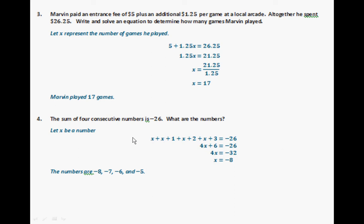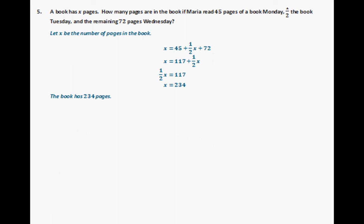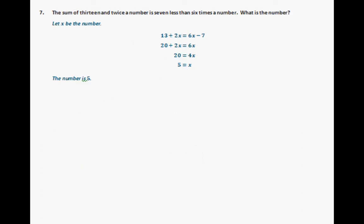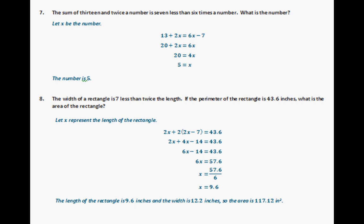So that's where you get the pattern: the number, then 1 after that, 2 after that, and 3 after that. Exercise 5: the book has 234 pages. For exercise 6, the answer is 145. For exercise 7, the number is 5. For number 8, the length of the rectangle is 9.6 inches and the width is 12.2 inches, so the area is 117.12 square inches.